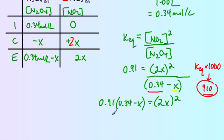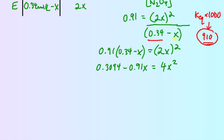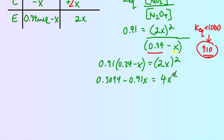So we get 0.3094 minus 0.91x equals 4x squared. Be careful when you square this - that will be 4x squared, 2x times 2x. Sometimes people forget to square the 2 and the x. A common error is to put 2x squared instead of 4x squared.